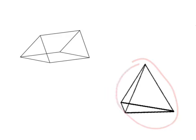This is a pyramid and there's one, two, three, four vertices and one base. There's one, two, three, four, five edges on a pyramid and one base. And there's one, two, three, three faces on a pyramid.